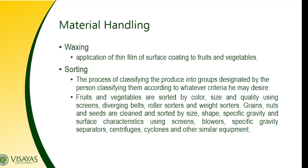We also have sorting. Sorting is the process of classifying foods into groups designated by the person classifying them, according to whatever criteria they may desire. Fruits and vegetables are sorted by color, size, and quality using screens, diverging belts, roller sorters, and other sorters. Grains, nuts, and seeds are cleaned and sorted by size, shape, specific gravity, and surface characteristics using screens, blowers, specific gravity separators, centrifuges, cyclones, and similar equipment.